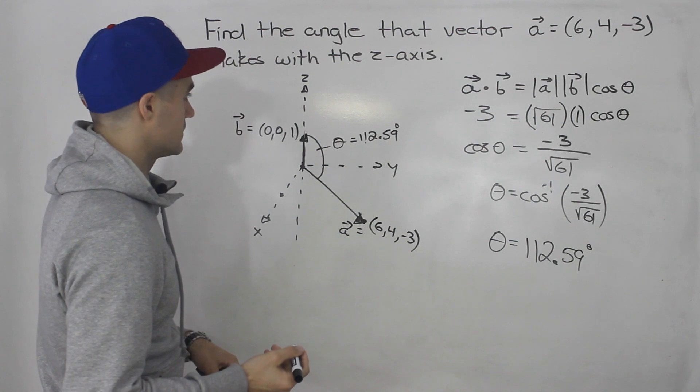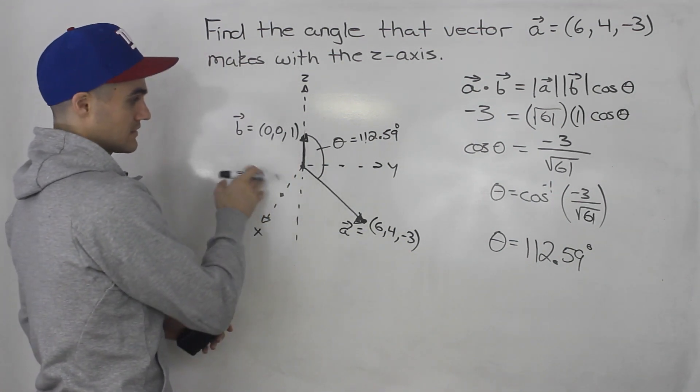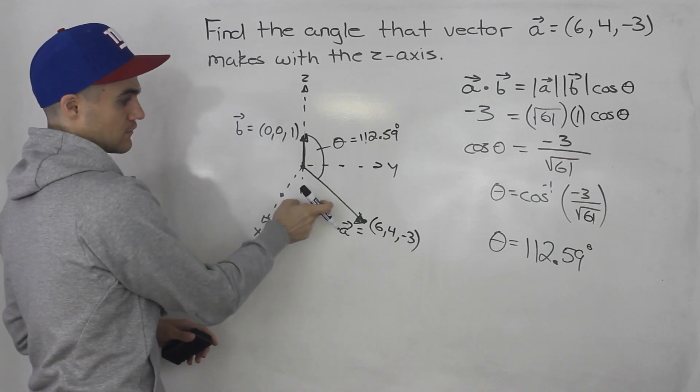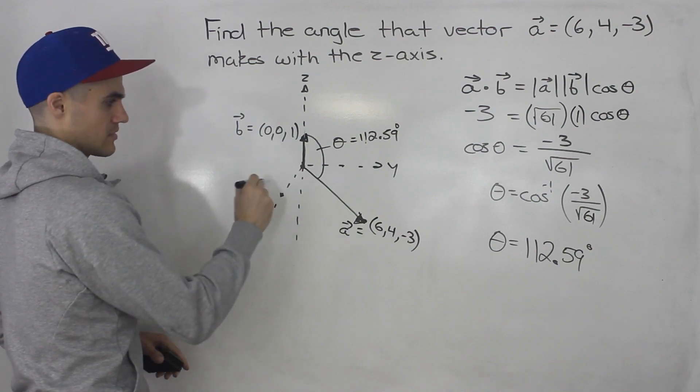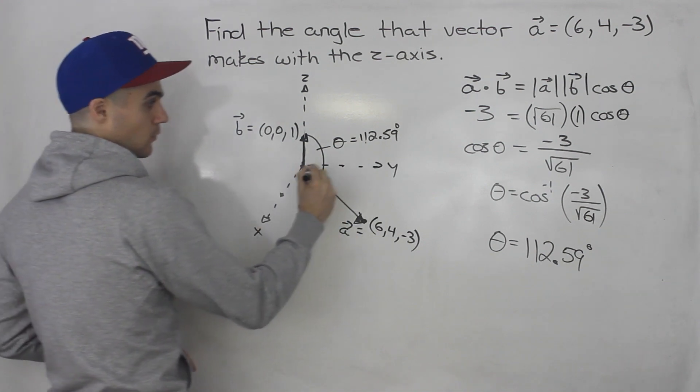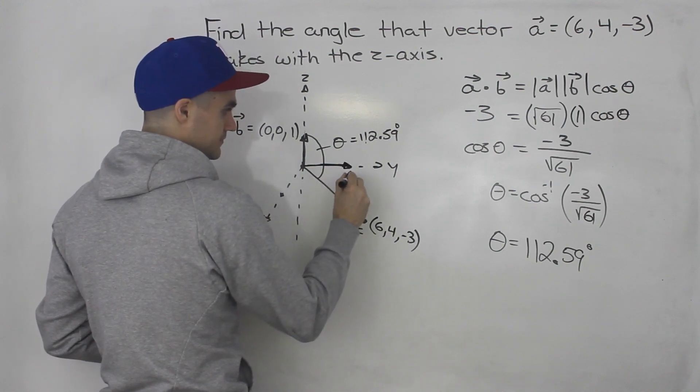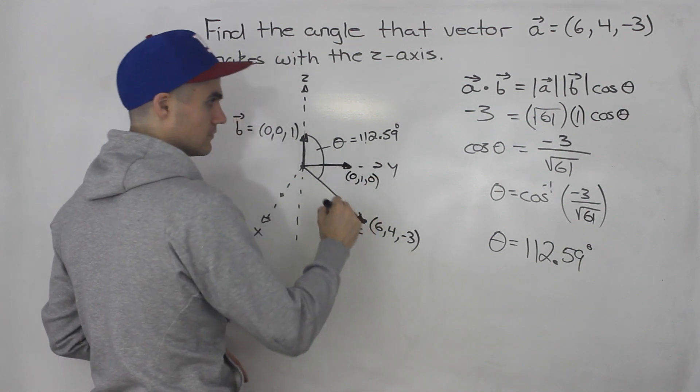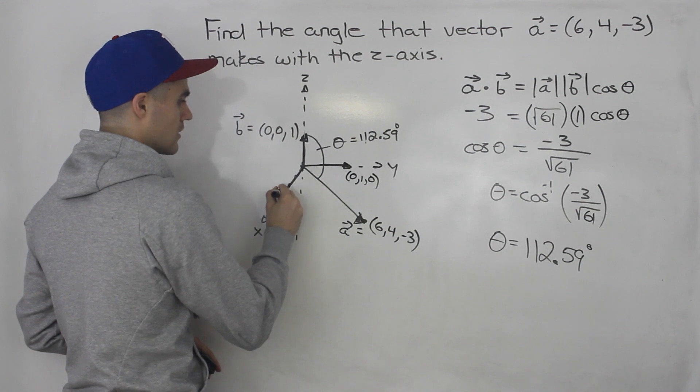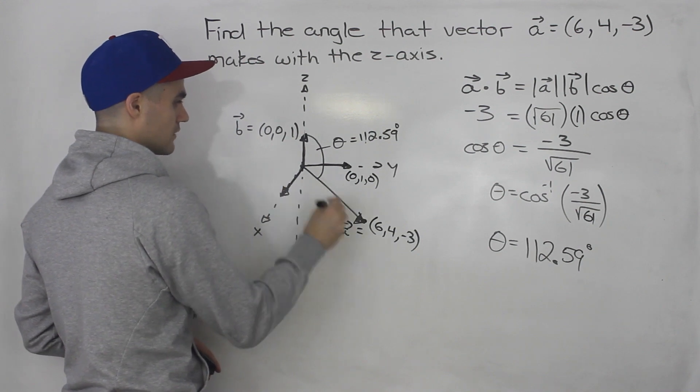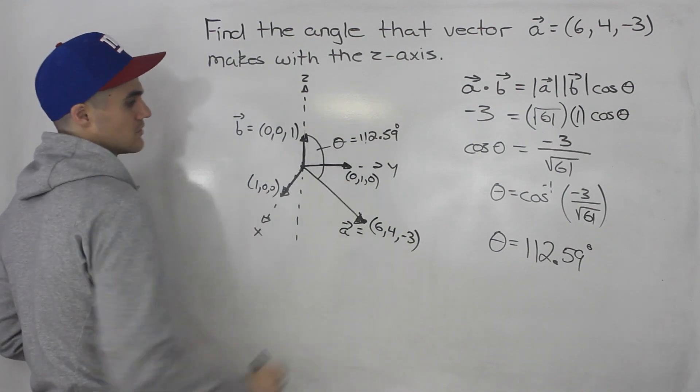So that's one way to do it. So you can always find a vector on the axis that you're working with and then just find the angle between that vector and the vector you're given. So what if instead they asked us to find the angle between this vector and the y-axis? Well, we would pick a vector on the y-axis, 0, 1, and 0. And we would do the exact same thing. Or if they were asking for the angle between the vector and the x-axis, we could pick 1, 0, 0, and do the same thing.